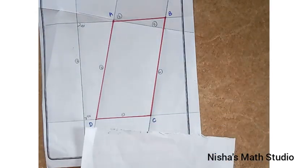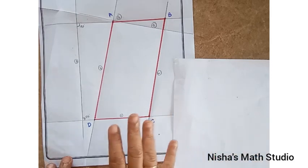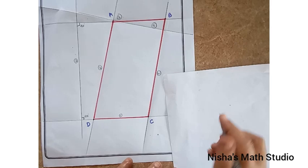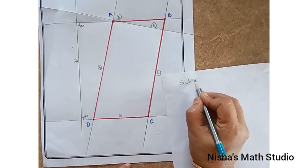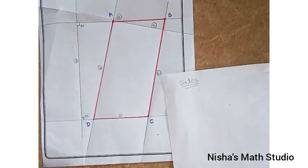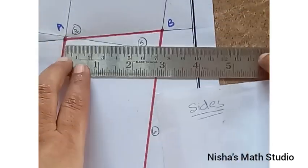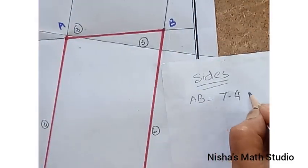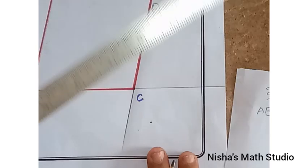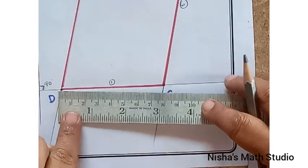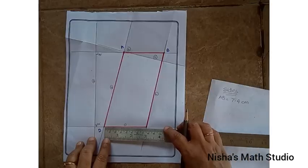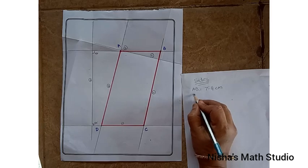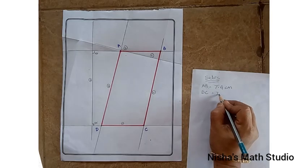Second step is to learn the properties. To learn the properties, I have to measure the four sides and the four angles. So, take a rough sheet and let's write down the sides here and keep the measure of each side. Now, let me measure AB. Check here, 7.4. So, AB is 7.4 centimeters. Now, let me check with DC which is parallel to it. DC will also give you 7.4. It is 7.4 centimeters.